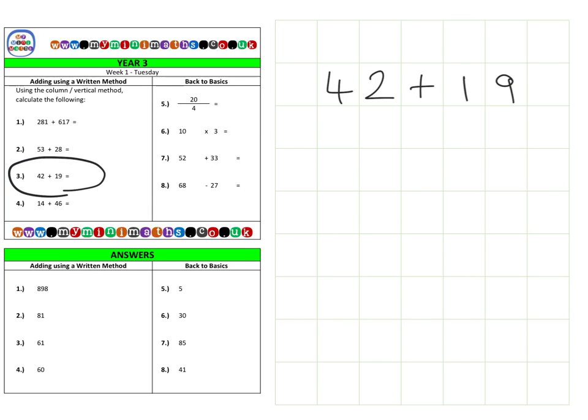So let's look at setting this out into our columns. We have forty-two add nineteen, and we have our units and our tens again. So let's have a look. Again, our units: two add nine is eleven. So it gets placed into relevant columns. If you look here, we have one unit and here we have a ten. And that's how we show our eleven when we add two and nine together.